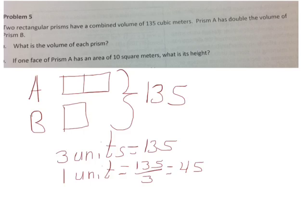So we know that prism B has a volume of 45. And we know that prism A has a volume that's 2 times 45, or 90.